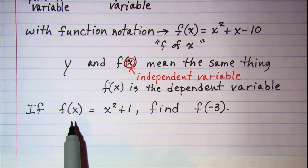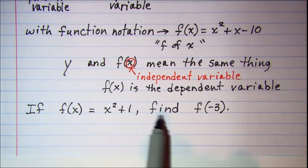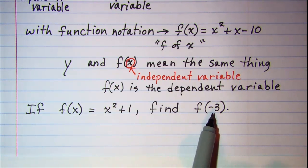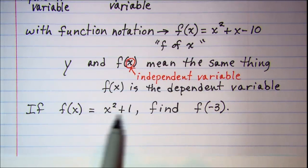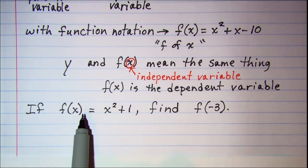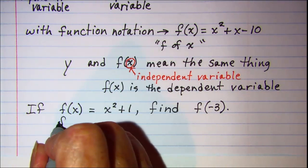So if we're given that f(x) equals x squared plus 1 and we're asked to find f(-3), all we need to do is substitute negative 3 into our function everywhere that we see an x.